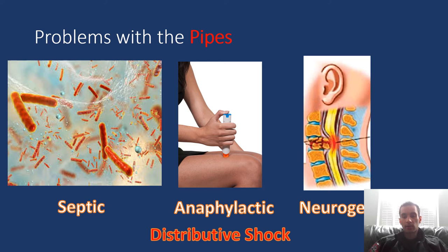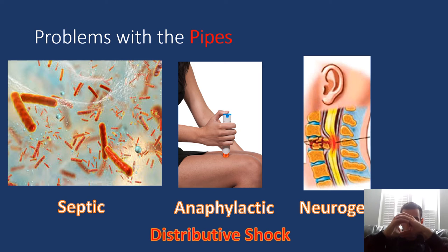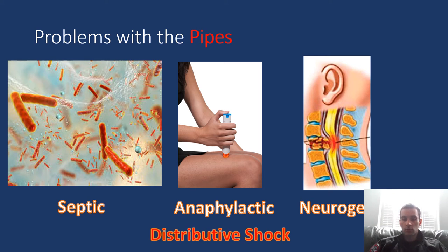What about the pipes? The problem with delivery through the pipes is that they're not distributing perfusion — blood carrying nutrients and oxygen — to the correct spots. Usually that happens because of inappropriate vasodilation, where the blood vessel goes from small to big inappropriately and drops the blood pressure. This can happen in septic shock, anaphylactic shock, and neurogenic shock, which can occur with a spinal cord injury — all leading to distributive shock.